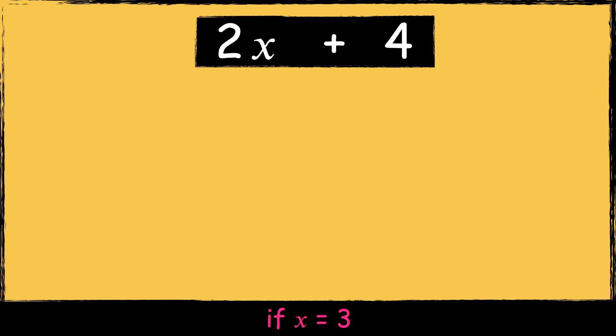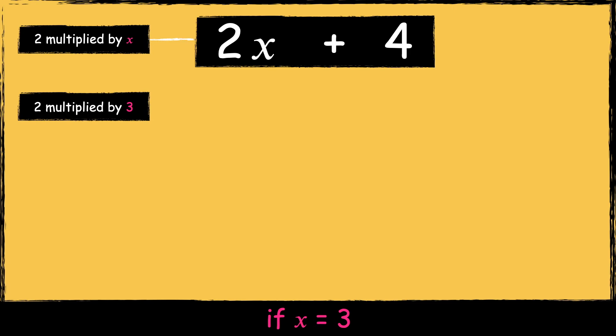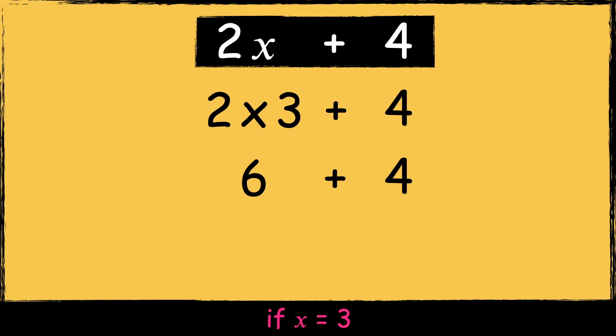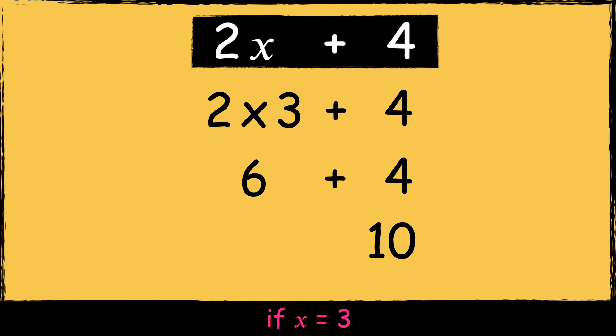Here is the first expression: 2x plus 4. We're going to find the value of this expression for if X equals 3. We know that 2x means 2 multiplied by X, and if X is 3, then we know that it's going to be 2 multiplied by 3, add 4. 2 times 3 is 6. Now we're left with the addition: 6 add 4 equals 10. So if X equals 3, the value of this expression is 10.